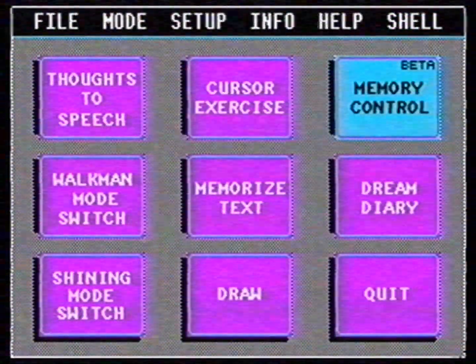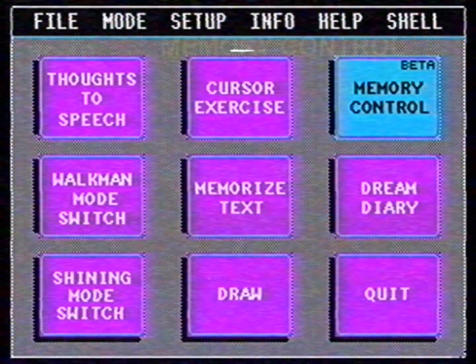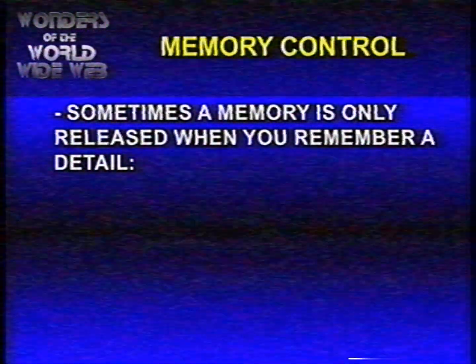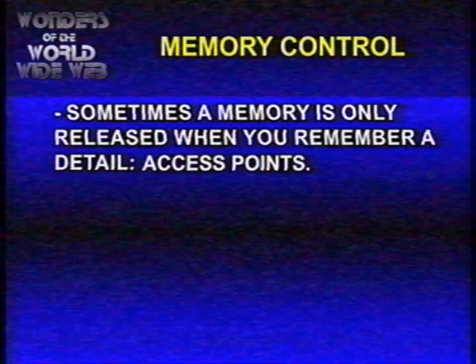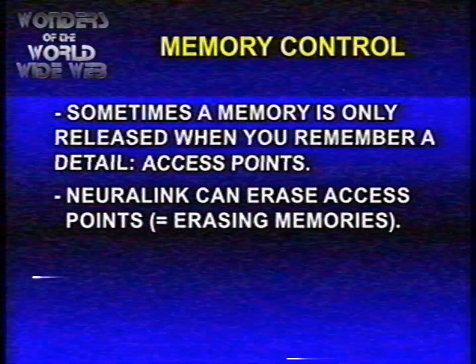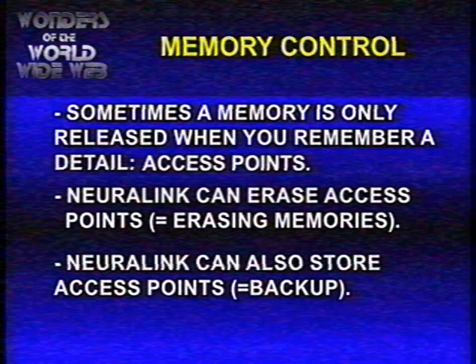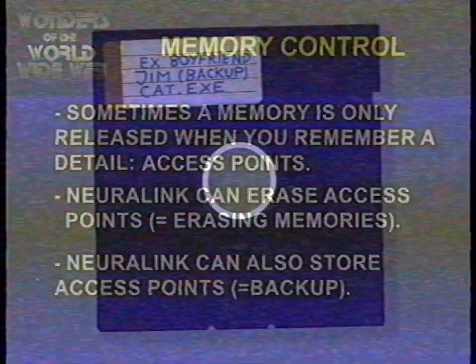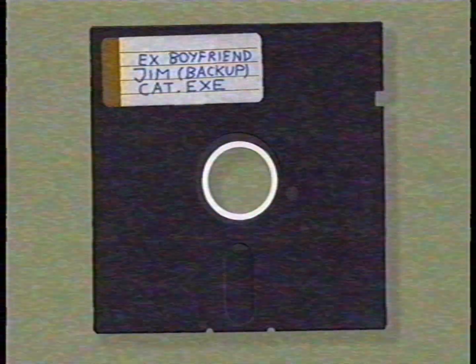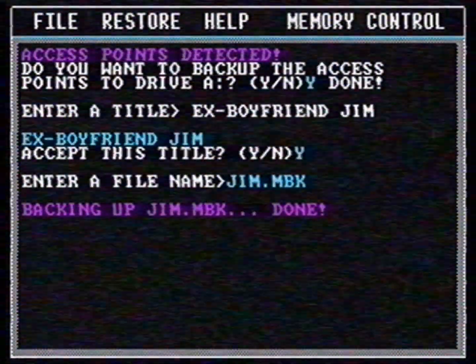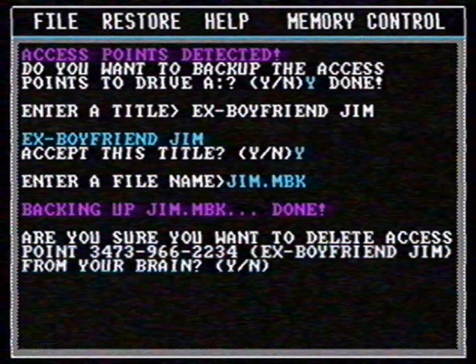You can also save and recover memories with Neuralink. Everyone has experienced it at some point — you can't remember something but suddenly recall everything when you hear a detail from that memory. We call those details access points. Neuralink can erase access points and it will erase entire memories. You can also store access points as a backup. I backed up the access points to memories of my ex-boyfriend Jim on a diskette. And now I'm erasing all my memories from my brain.